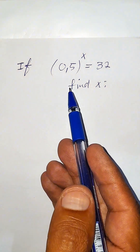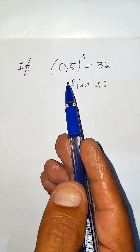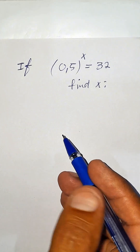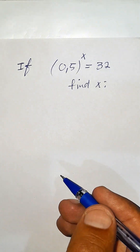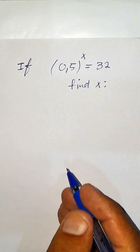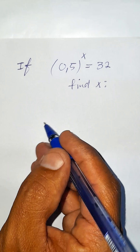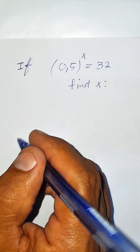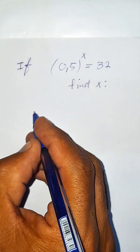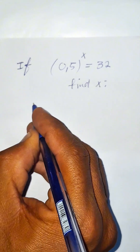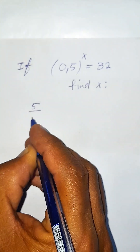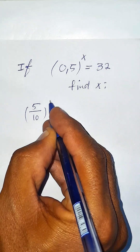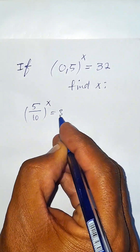If 0.5 to the power of x equals 32, let's find out the value of x. First, instead of 0.5, it can be written as 5 over 10 to the power of x equals 32.